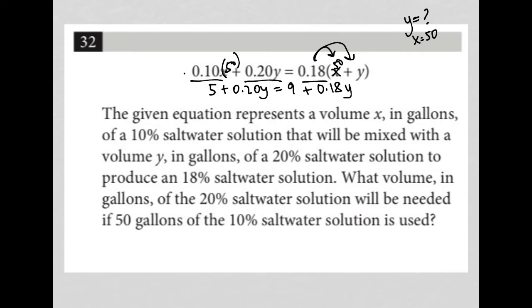I can now start to simplify and combine like terms. I want my Ys on the left-hand side. So if I subtract 0.18Y from both sides here. I'm running out of space. So that's gone there.